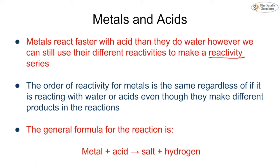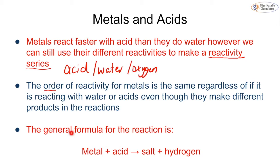Metals can react faster with acids than they do with water, but we can still take advantage of the difference in reactivity to make the reactivity series — the same as we did with water and oxygen. When we look at metal reactions with acids, water and oxygen, the order of reactivity is the same regardless of which one you're reacting with, even though they make different products. We see the same order each time.